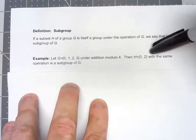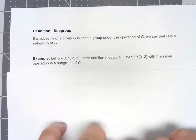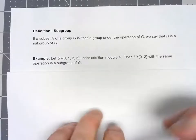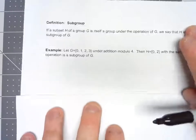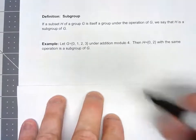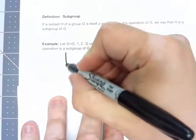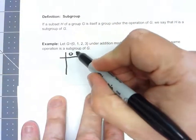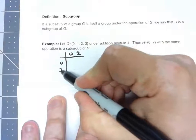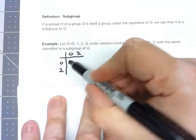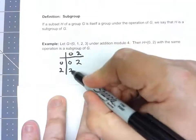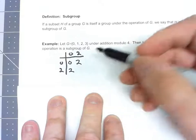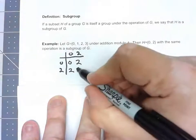So we want to see if that has all the properties of a group. Probably the easiest way is to look at the Cayley table, which is very simple since there's only two elements. We've got 0, 2, 0, 2. 0 plus 0 is 0, 0 plus 2 is 2, 2 plus 0 is 2, 2 plus 2 is 4, which mod 4 gives us 0.